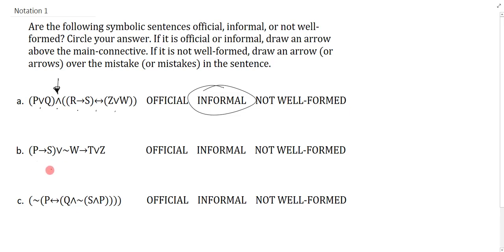Now we look down at B. We got P arrow S, disjunction, negation W or T or Z. Again, nothing sort of looks too fishy here. I see that I have this, this, this, and this all on the same level, but that's actually okay because I don't have any sort of weird combinations of things.